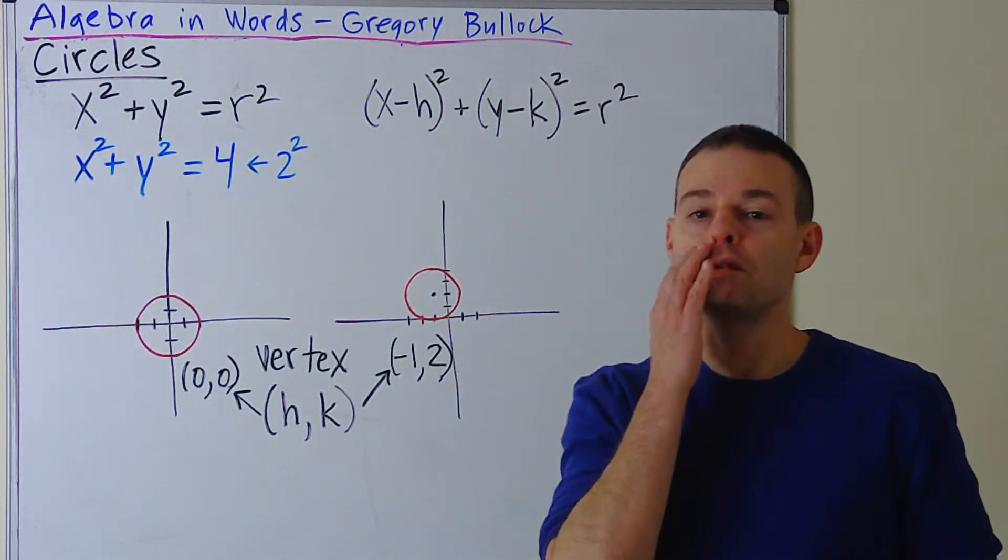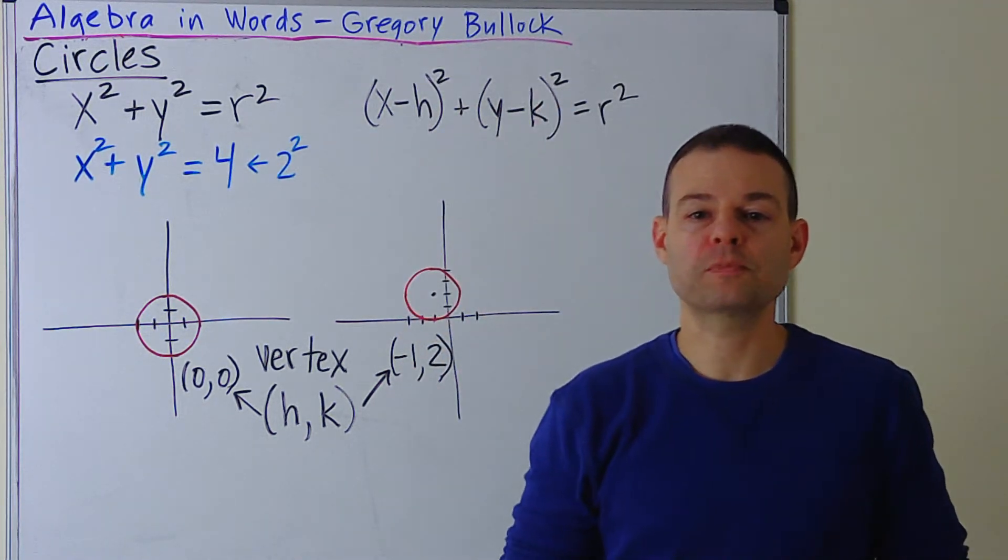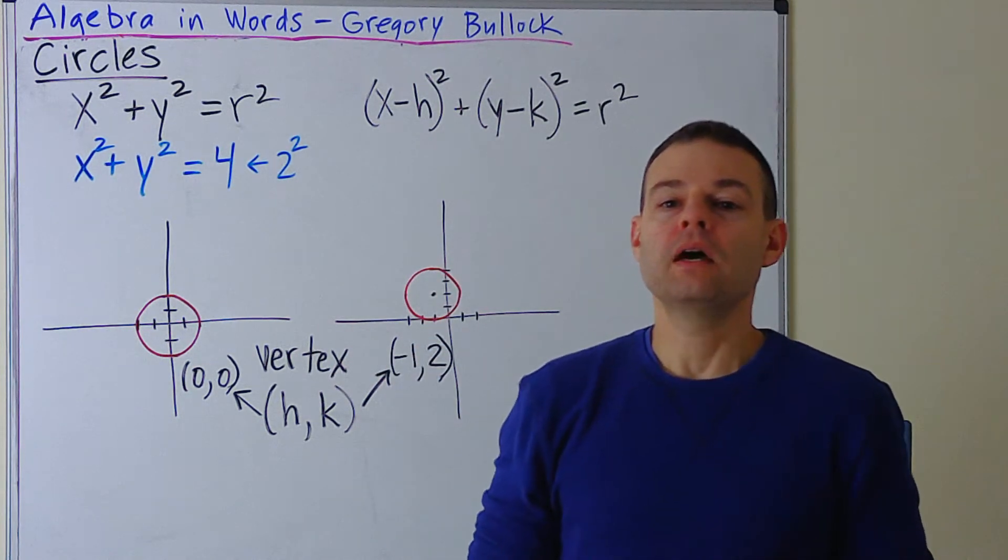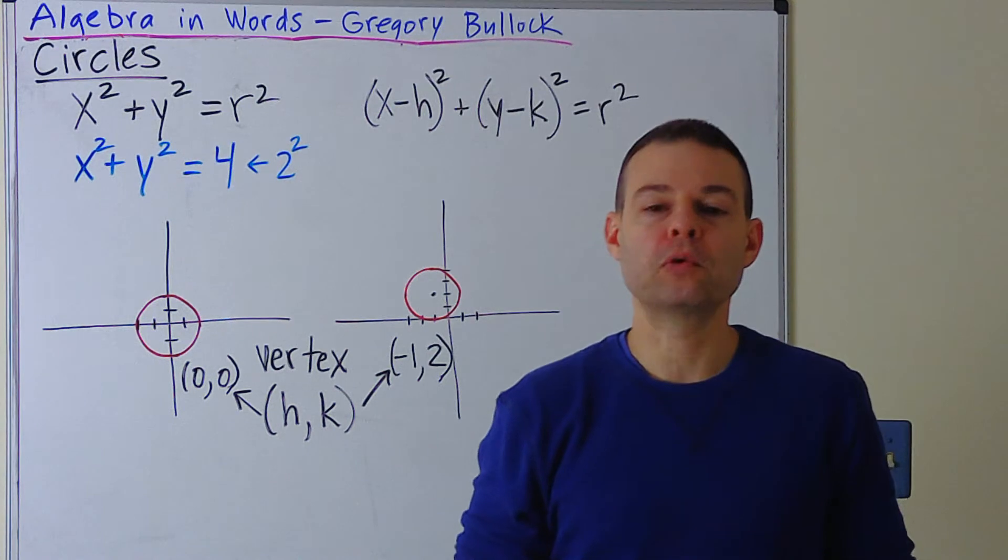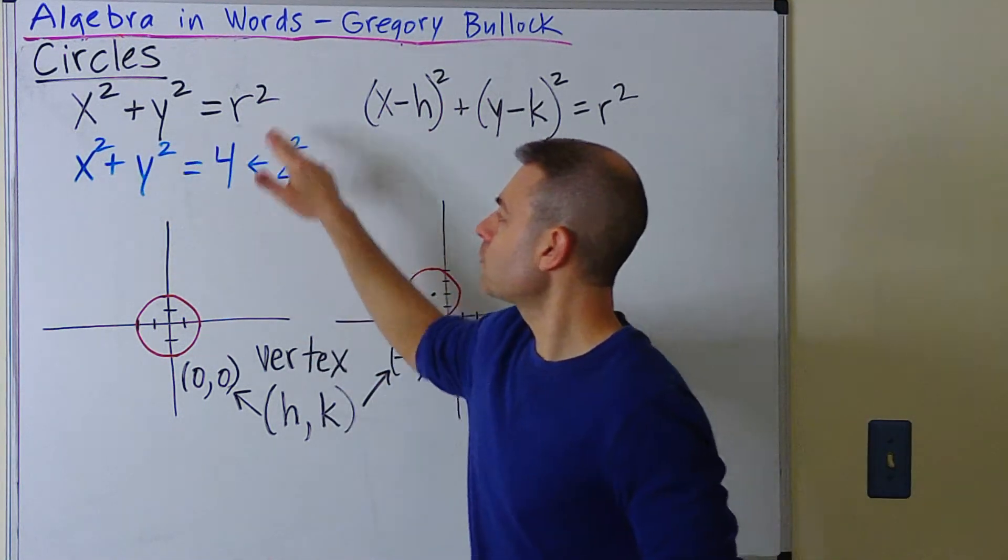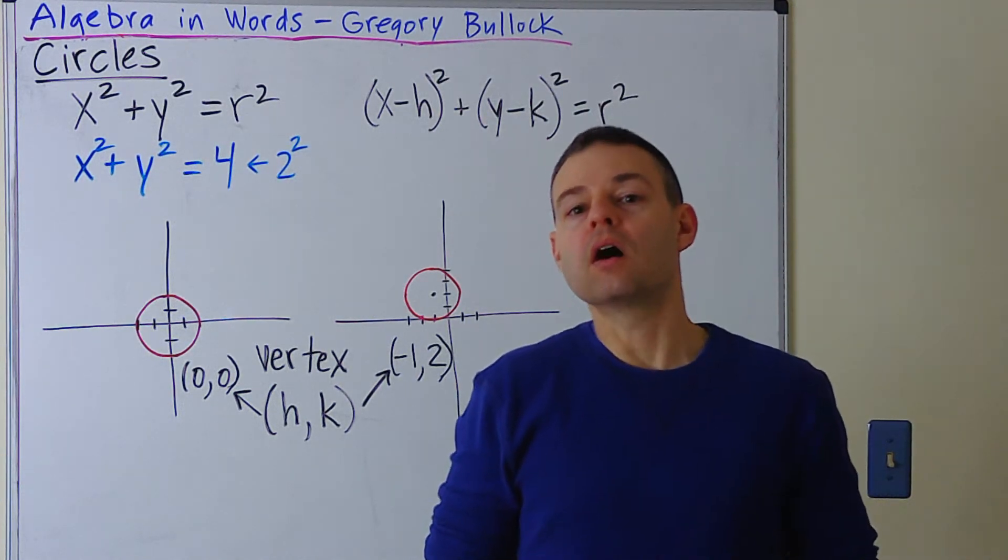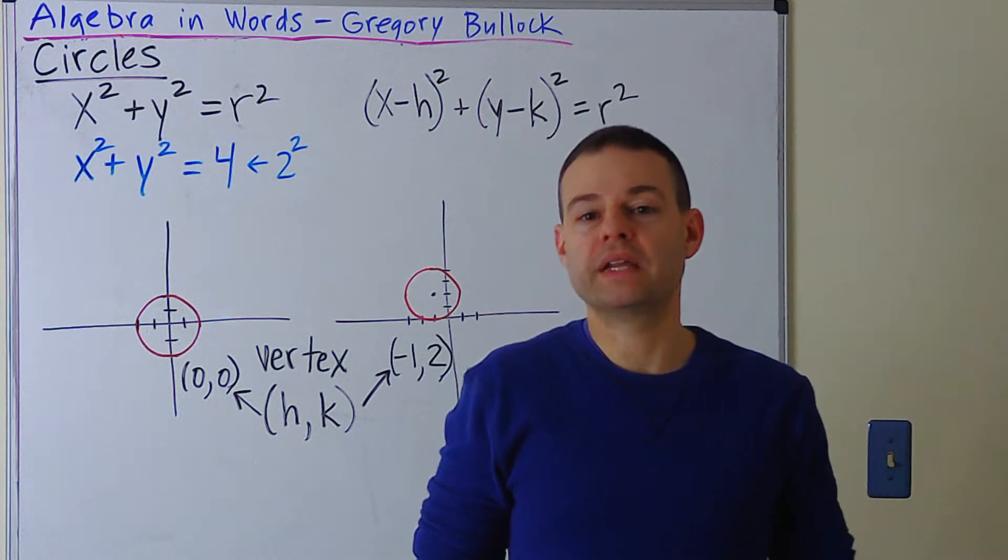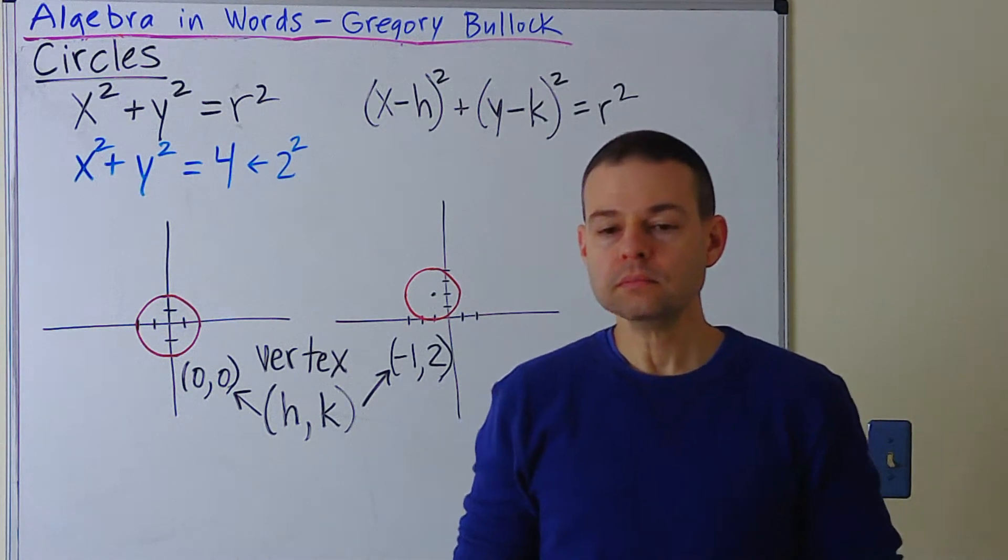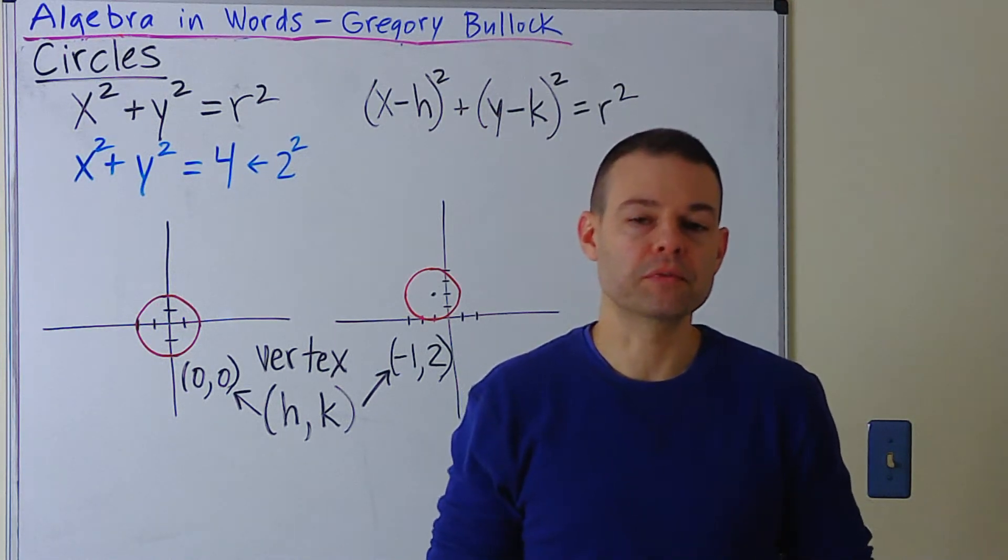Now, I have two things on the board. I have a couple of equations, which I'll explain, and I have two of their representative graphs. I want to start with the most base form of the equation of a circle, and that is this: x² + y² = r². The r represents the radius. When it's squared, it's the radius squared. And the x and the y, I'll explain how they relate as we go through this.